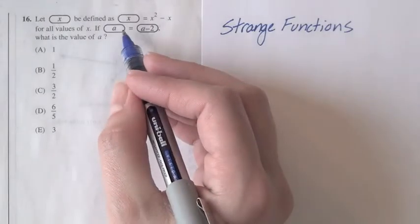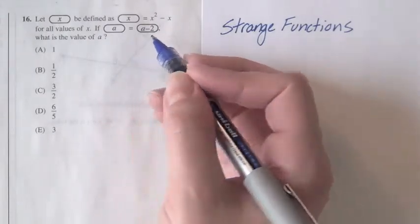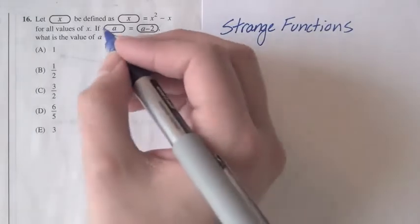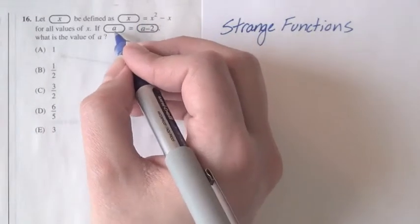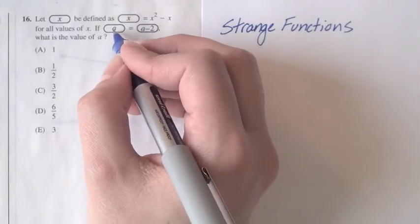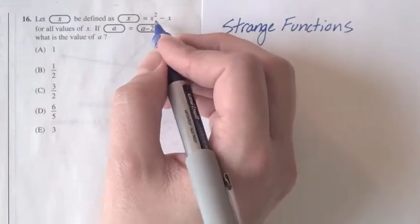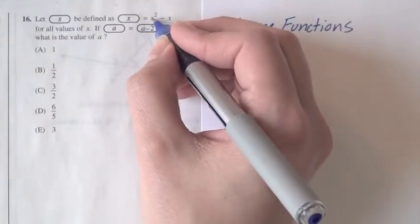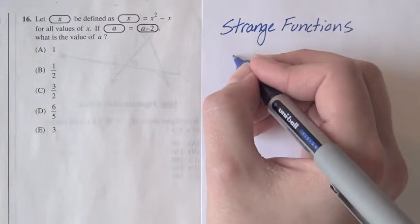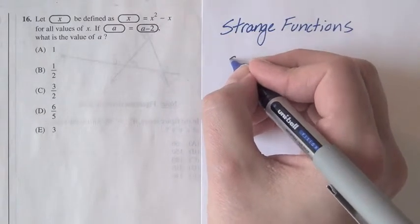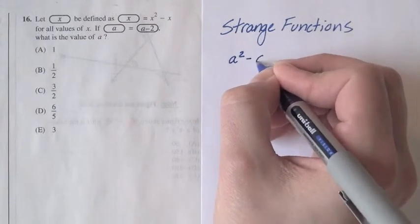So in order to solve a oval is equal to a minus 2 oval, let's get started by plugging things in to this rule. On this side of the equal sign we have a in that oval, so that means we're going to put an a everywhere we see an x in this rule here. So a oval is going to be equal to a squared minus a.